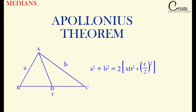This is the formula of Apollonius theorem. This theorem shows the relationship between sides of the triangle and the length of the medians. As per this theorem, the sum of the square of any two sides of any triangle equals twice the square on half the third side, together with twice the square on the median bisecting the third side.